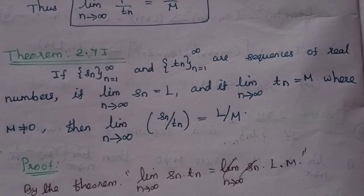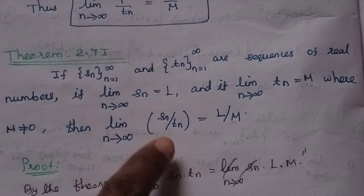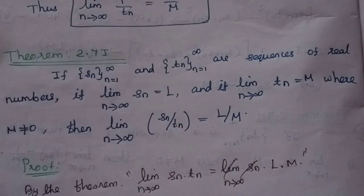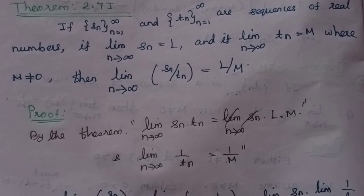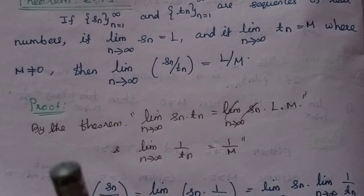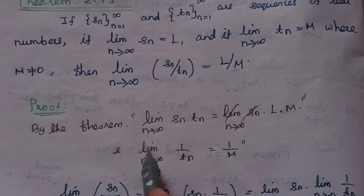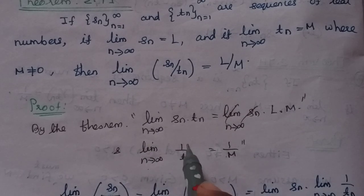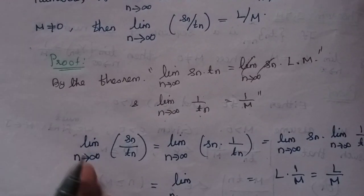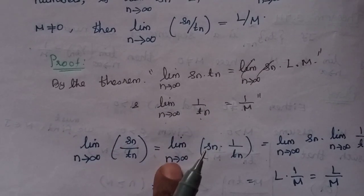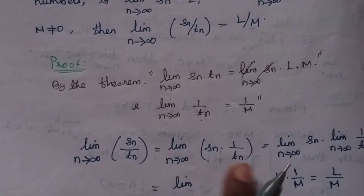In the previous result, sn by tn we have as product of sn and 1/tn. We use two results: limit n tends to infinity of sn into tn equals L into M, and limit n tends to infinity of 1/tn equals 1/M. Therefore limit n tends to infinity of sn by tn equals L times 1/M equals L by M.